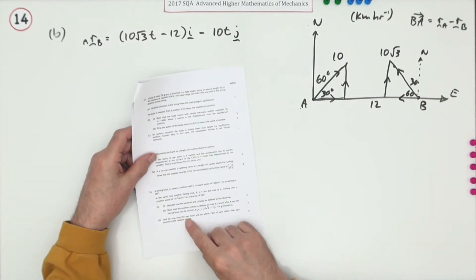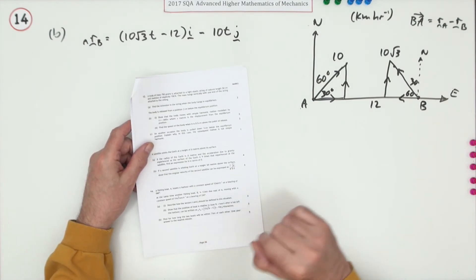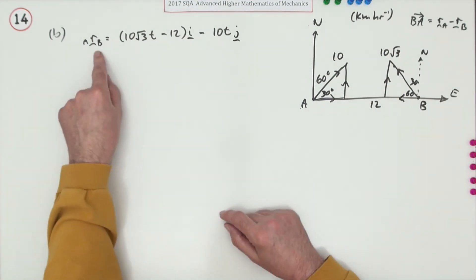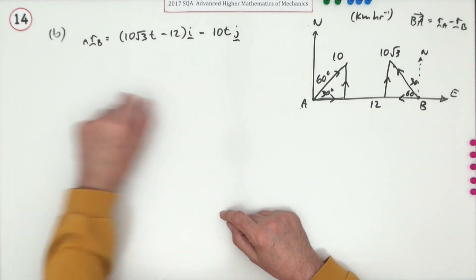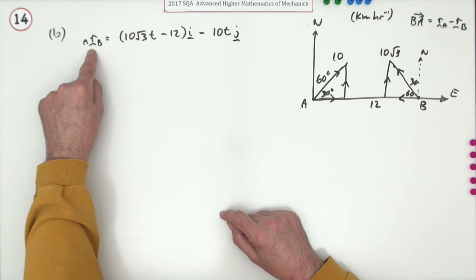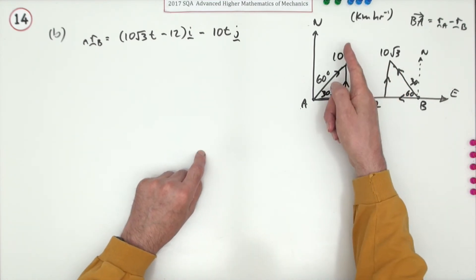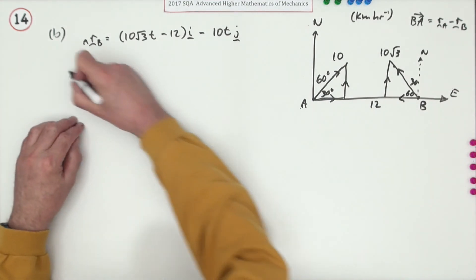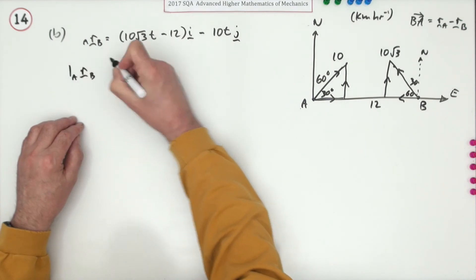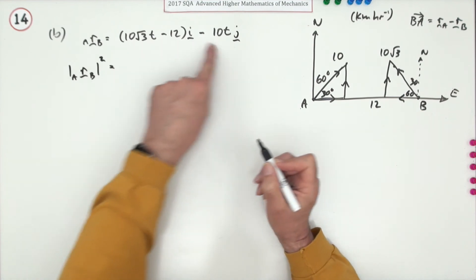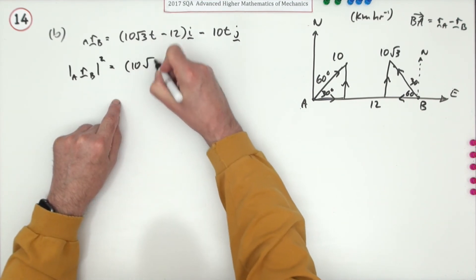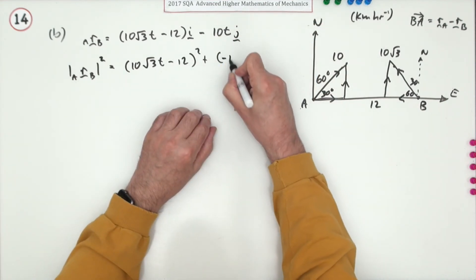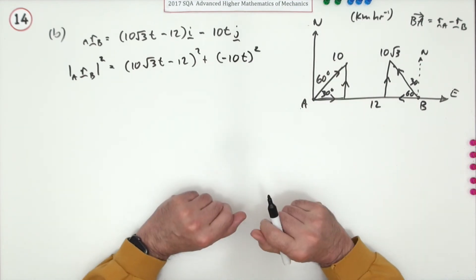Part b: find for how long the two boats are within 7 kilometres of each other, giving the answer to the nearest minute. The magnitude of the relative position vector gives the distance between the boats. So we need the magnitude of rA relative to B. Leaving it squared: the magnitude squared equals (10√3·t − 12)² + (−10t)².